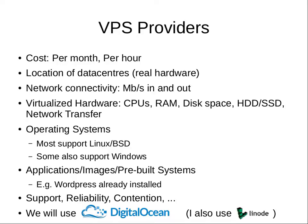The server is accessed over the internet, so you want to consider how fast is the network access into that data center — how many megabits per second coming in and out; the more the better. When you choose a VPS, consider what virtualized hardware they offer: how many virtual CPUs, how much RAM, how much disk space, whether they offer traditional hard disks or faster solid state drives, and how much network bandwidth. You also want to consider what operating systems they provide — most will support Linux or BSD-based operating systems.